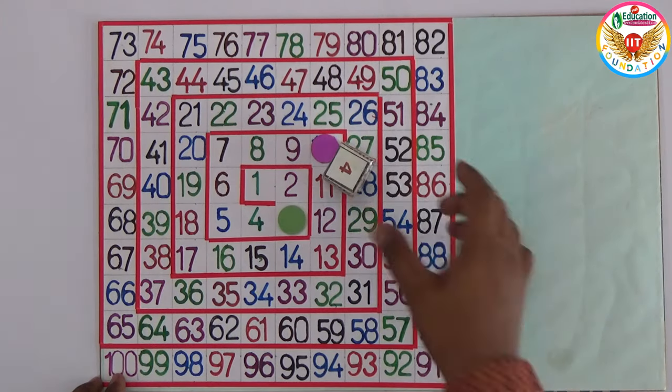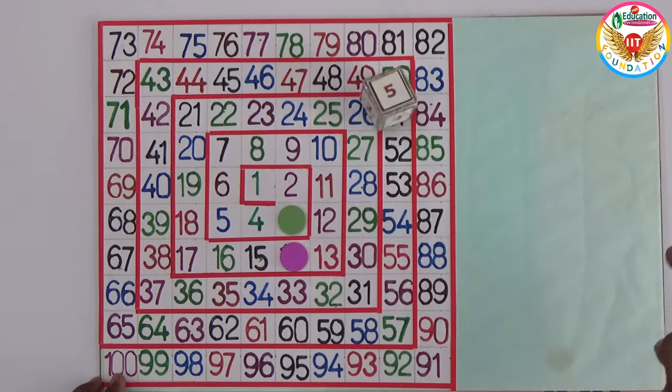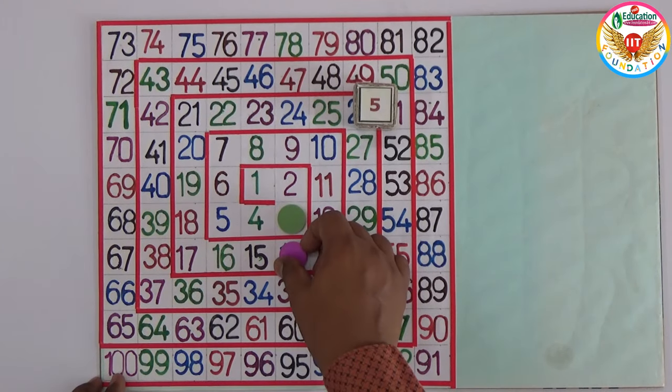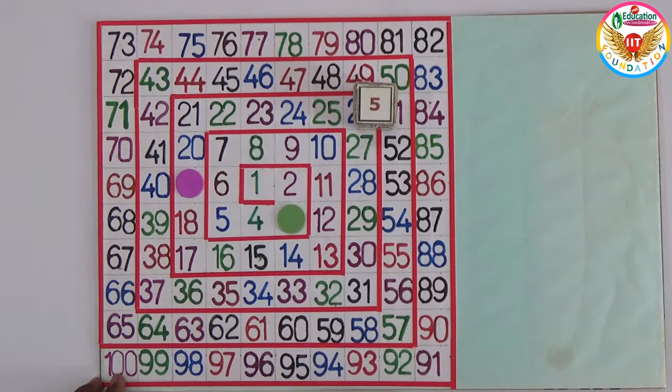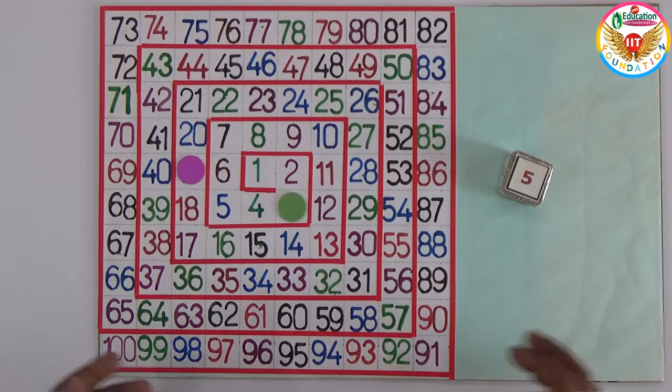You get five: one, two, three, four, five—landing on nineteen. It's not an even number, so the chance goes to the second player. This is a fun way of learning simple math concepts using this spiral board number game.